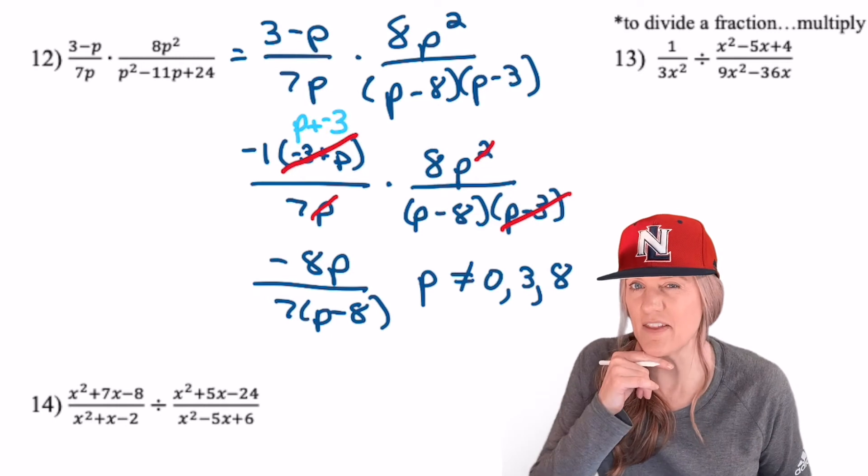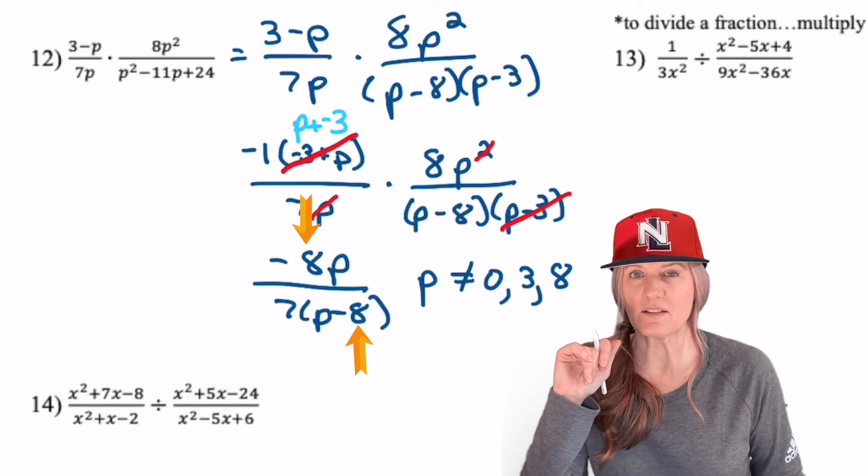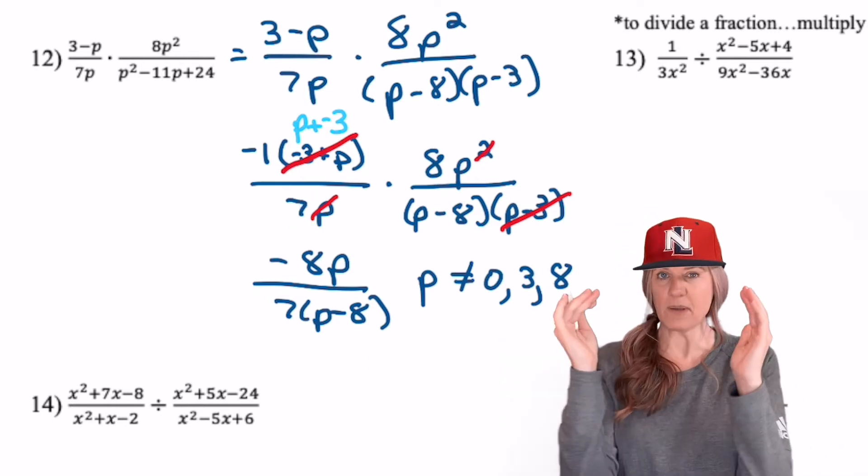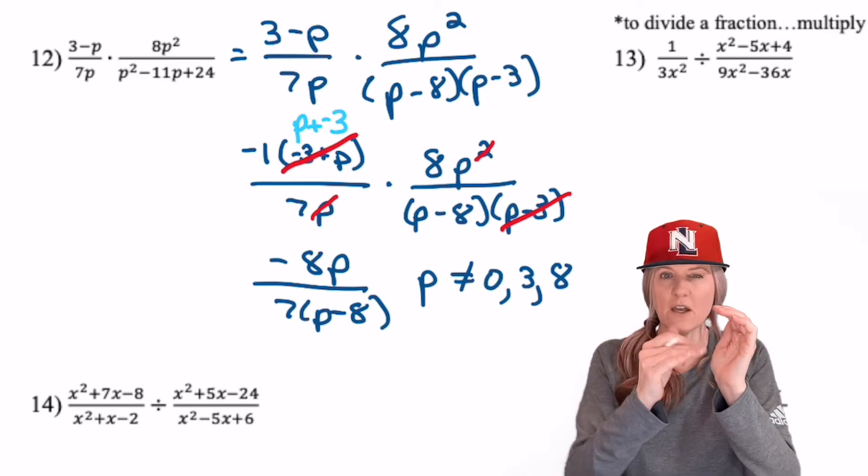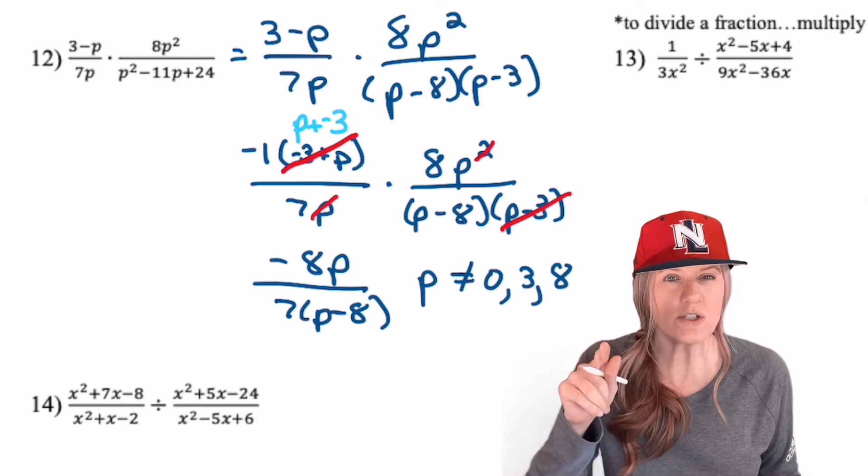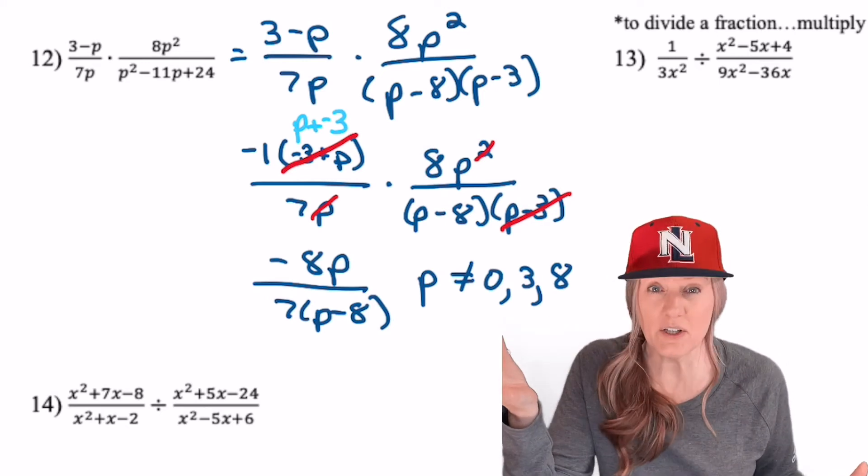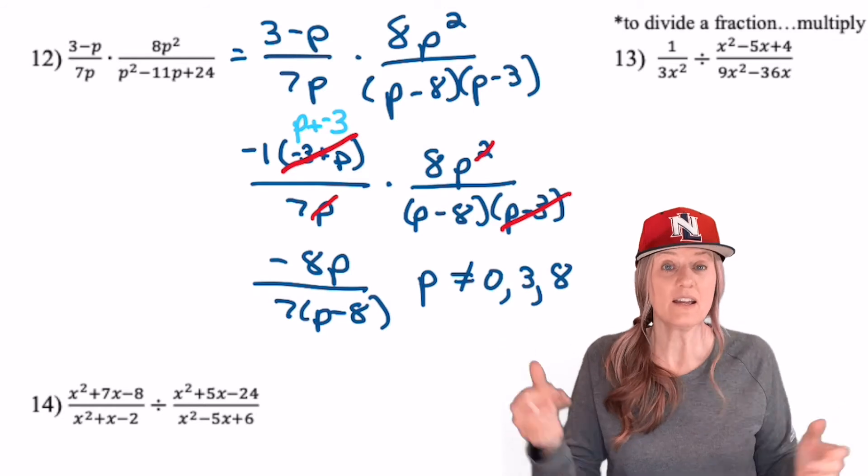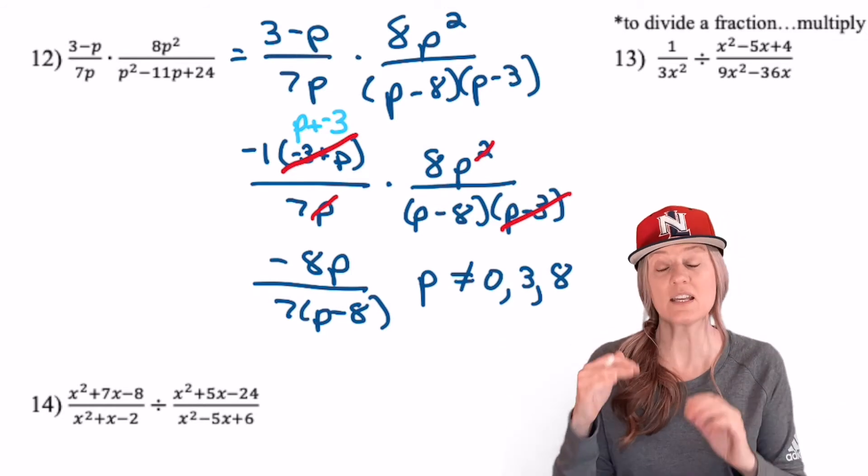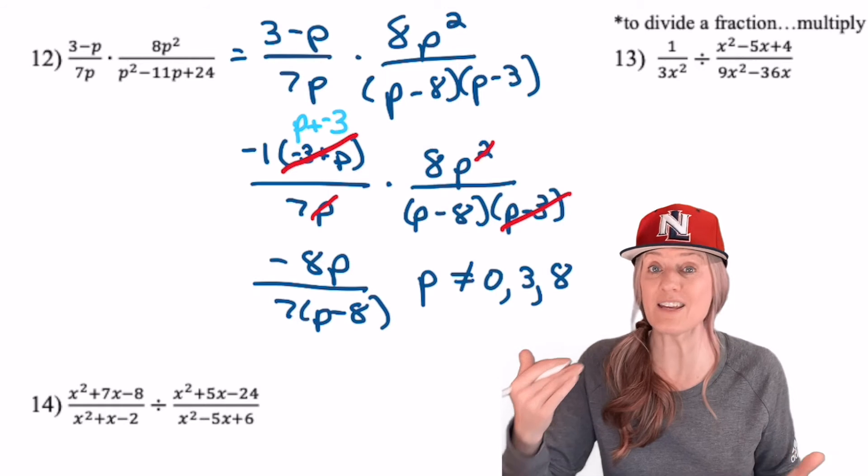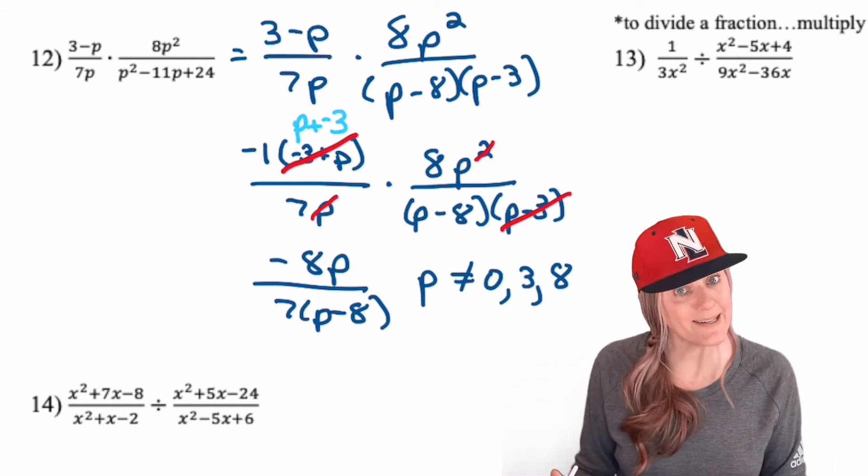A couple more clarifying thoughts. Can we divide out the 8's? No, because that p minus 8 in the denominator is hugged out. All of it goes or none of it goes. Should you distribute the 7 in the denominator? You could, but why would you? It's easier to find restrictions in factored form. Don't go any further than you have to unless you have a really good reason to.